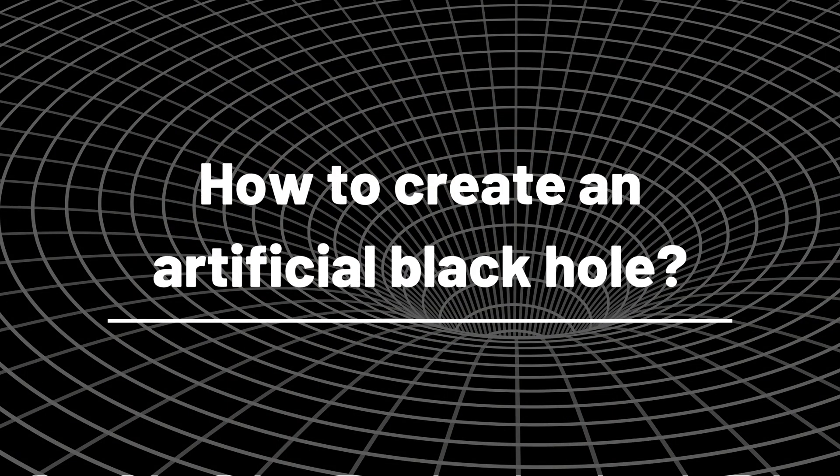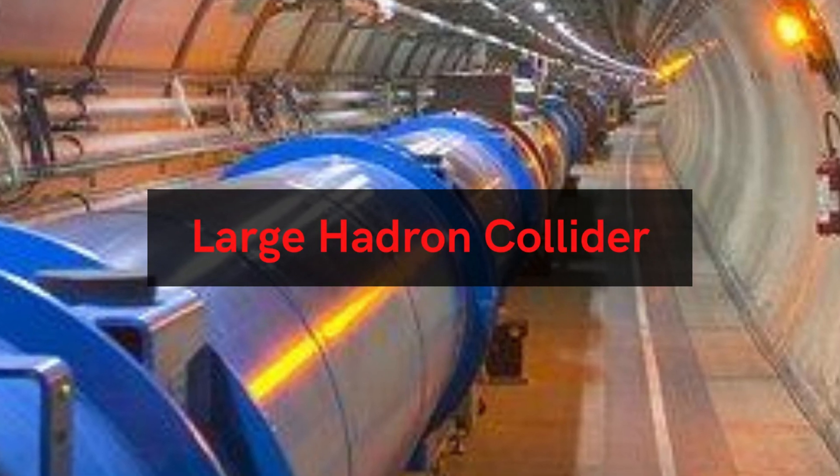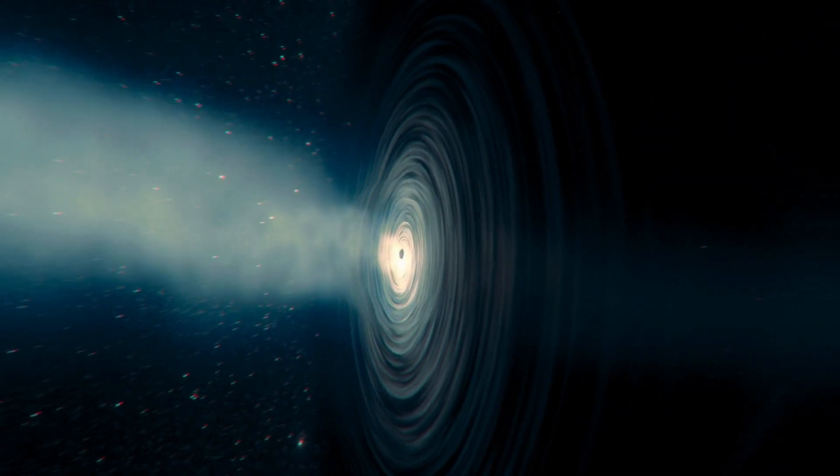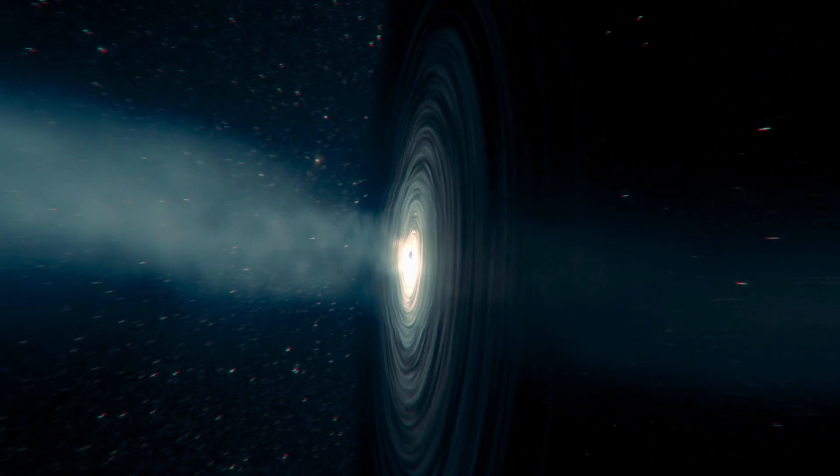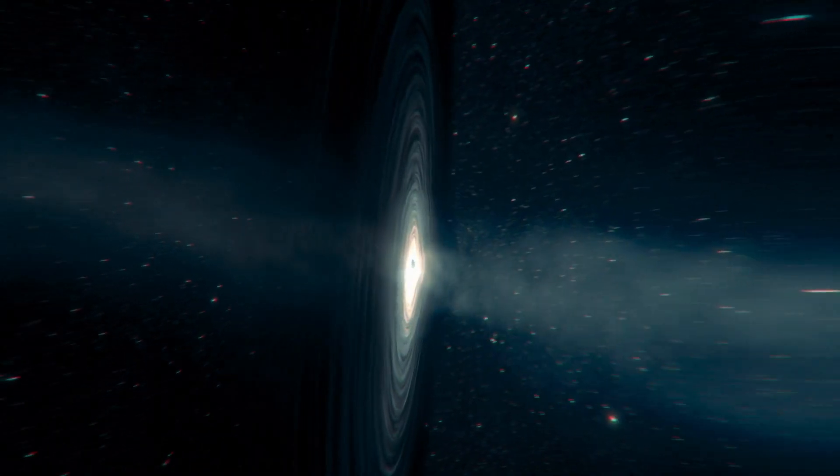How to create an artificial black hole? One way to create an artificial black hole would be with a particle accelerator, such as the Large Hadron Collider. By colliding particles together at extremely high energies, it might be possible to create a tiny black hole. However, this would likely be very unstable and would quickly evaporate due to Hawking radiation.